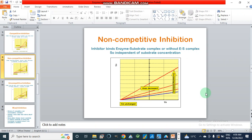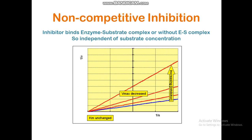Dear viewers, in our previous study we described how we can determine the type of enzyme inhibition when we have in vitro kinetic data. We take different concentrations of substrate and determine rates with different concentrations of inhibitor, then plot a Lineweaver-Burk plot, which is an inverse or double reciprocal plot. The x-axis is the inverse of substrate concentration and the y-axis is the inverse of enzyme activity, or rate, which is 1/V.